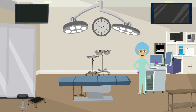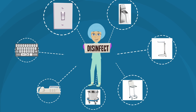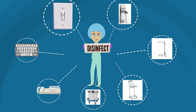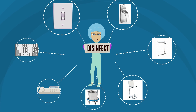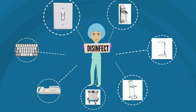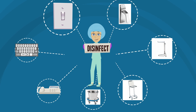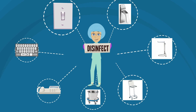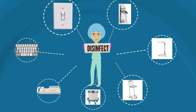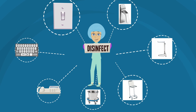Continue to move around the room in a clockwise or counterclockwise pattern. Clean horizontal surfaces moving from cleanest to dirtiest. Disinfect light switches, door push plates and handles, mayo stands, hamper stands, kick buckets, telephones, keyboards, and other items in the room.